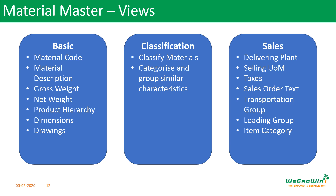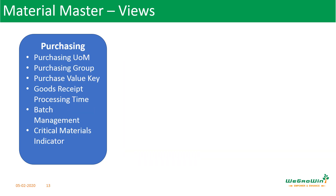The sales view contains all the details such as delivering plant, selling unit of measure, taxes, conditions, transportation group, loading group, and item category. This view has to be maintained for materials which have to be sold — like finished goods or trading goods. The purchasing view contains the purchase unit of measure, purchase group, material group that groups together materials with similar attributes, and the purchasing value key that specifies under-delivery and over-delivery tolerances, reminder times, GR processing time, and batch time. This view is important for all externally procured items.